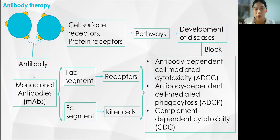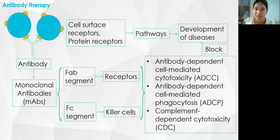Antibody therapies proposed for these two diseases are widely used today. Antigens present on the cell surface can contribute to disease development by activating different downstream pathways. Antibodies that bind to these targets can modulate the effects induced by the antigen. Mimicking the antibody structure, monoclonal antibodies (MAbs) were introduced. MAbs are composed of heavy and light chains, where the Fab segment binds to target antigens and the Fc segment can bind to cells with a killing effect through ADCC, ADCP, and CDC to prevent disease development.